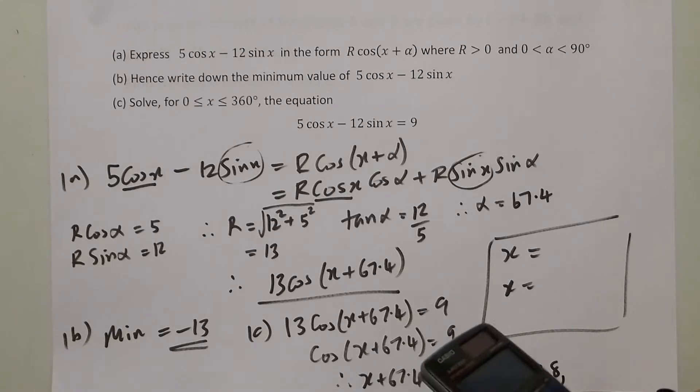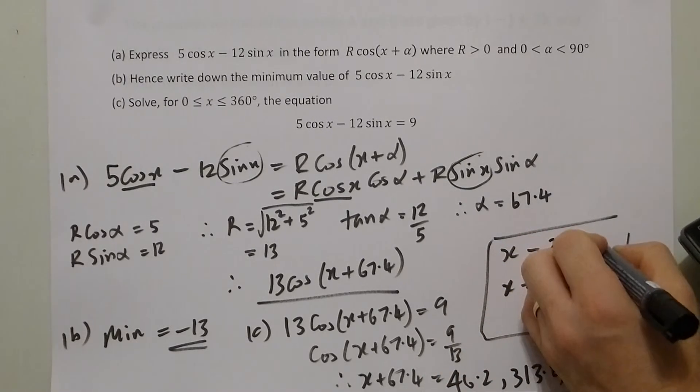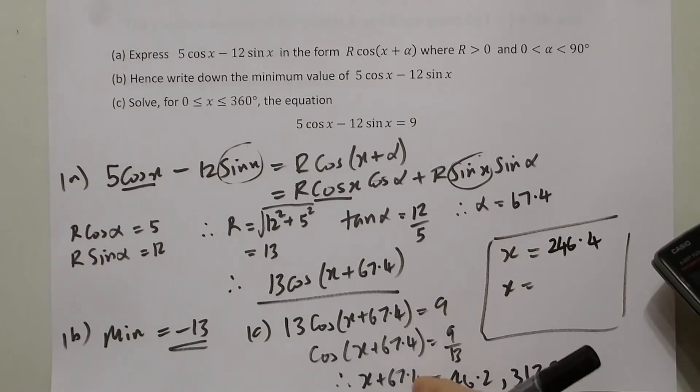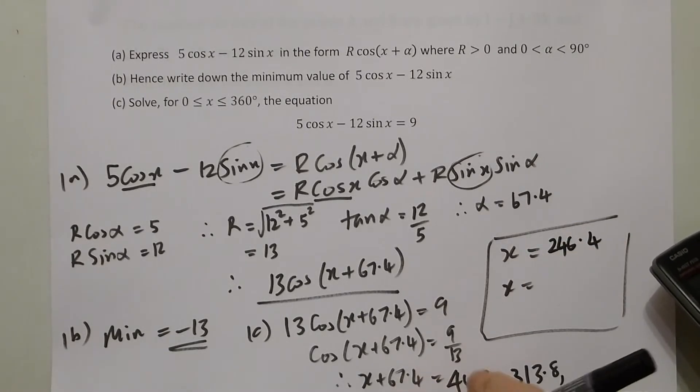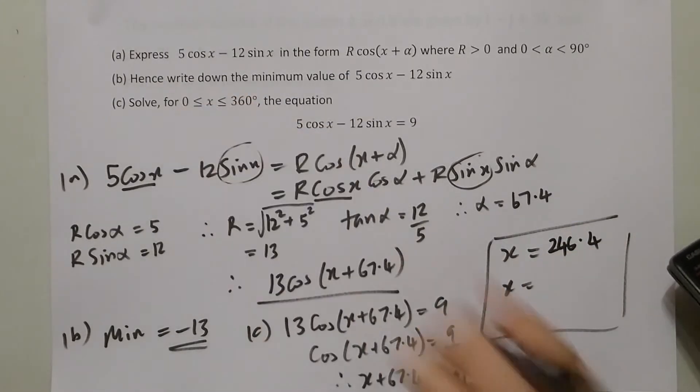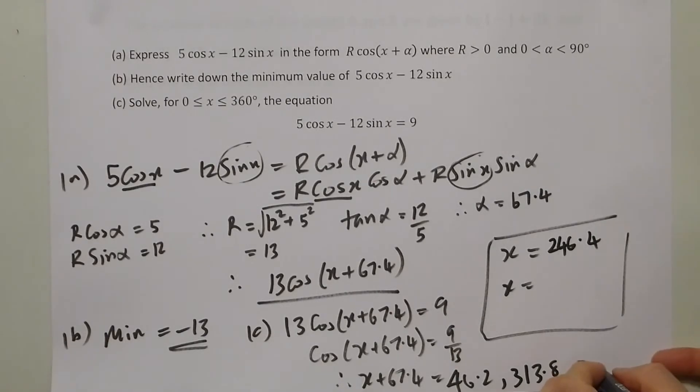If I take 67.4 from this one, I get a negative answer, which is out of the range. So it means I am allowed to include the next one up, which would be 406.2.